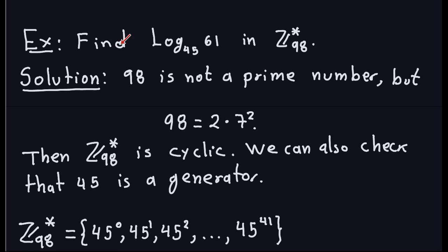We want to find the discrete log in base 45 of 61 in the group Z98*. The first thing to notice is that 98 is not a prime number, but this group is still going to be cyclic. The reason is that 98 is 2 times 7 squared, and whenever this number has the form of twice the power of a prime, this group will be cyclic.